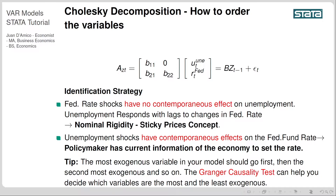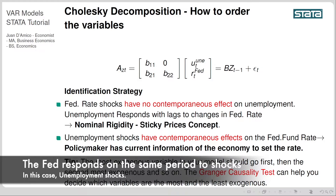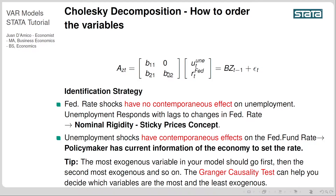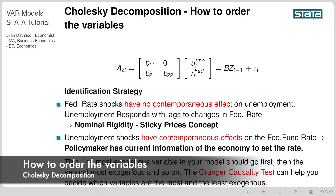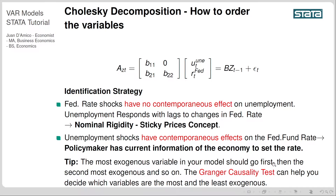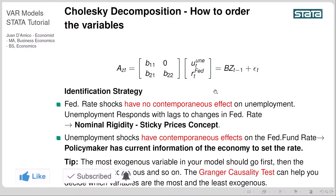For example, there is a shock on unemployment and unemployment increases — the policymaker can see this and change the rate to see if this will have an effect in the coming periods. That's why we allow the fed rate to respond contemporaneously to changes in unemployment. As a tip, the most exogenous variable in your model should go first, then the second most exogenous, and so on. The Granger causality test can help you decide which variables are most and least exogenous and how to order them.